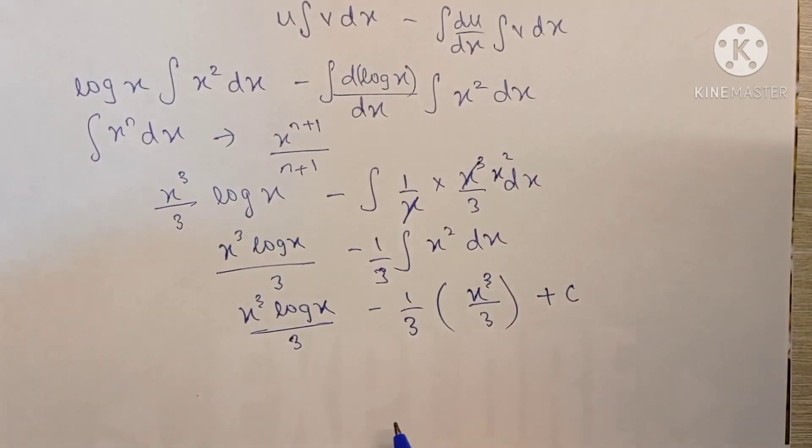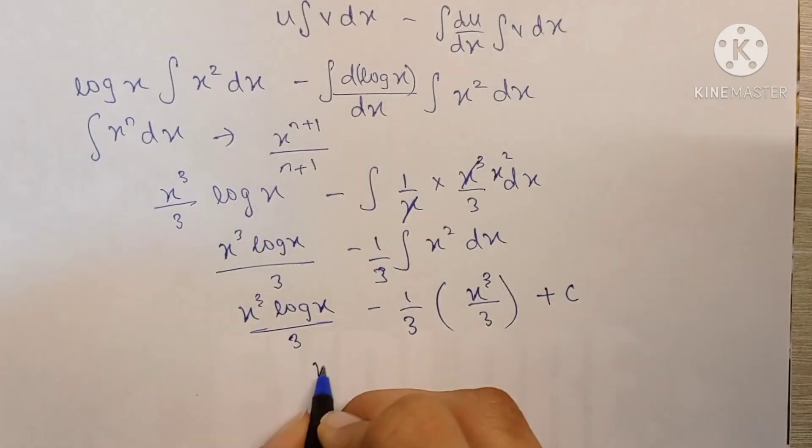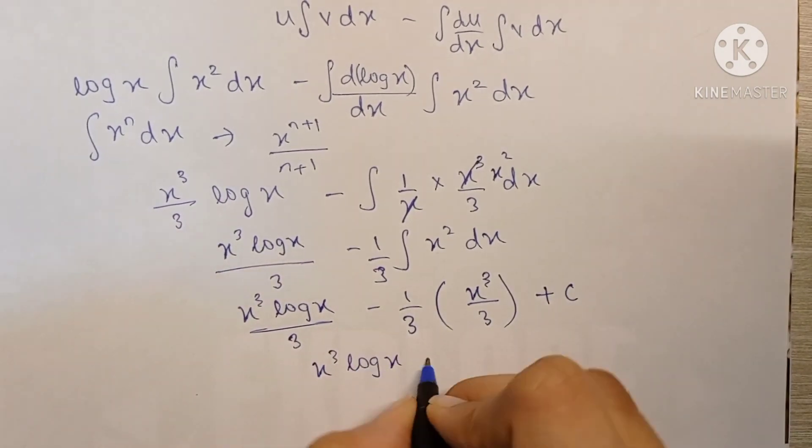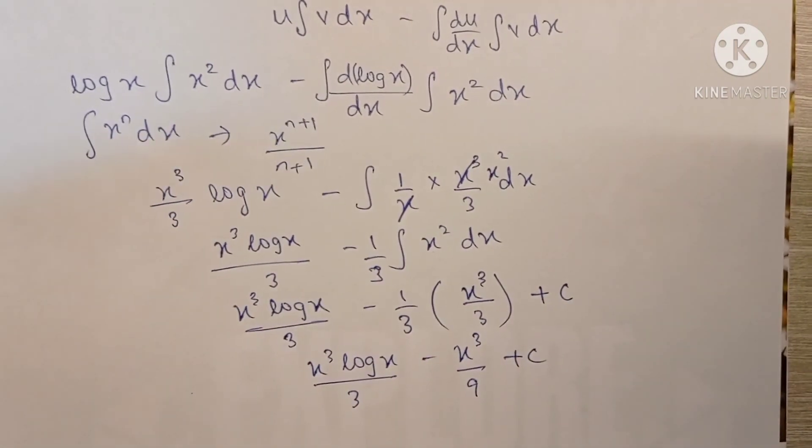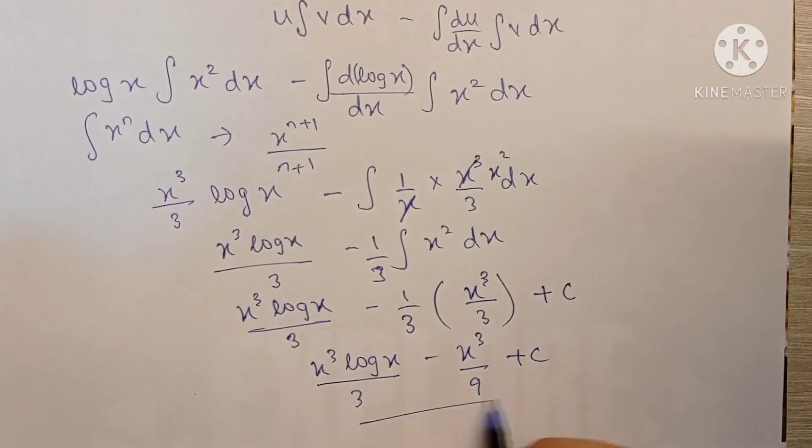And don't forget to add the plus c. The final answer becomes x cube log x upon 3 minus x cube upon 9 plus c. And this is the final answer exactly how it is given in the textbook.